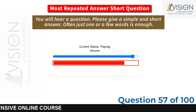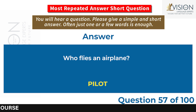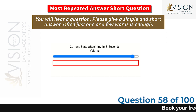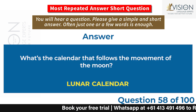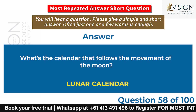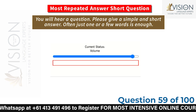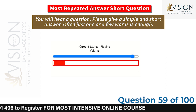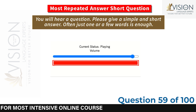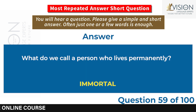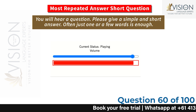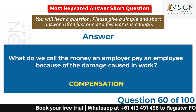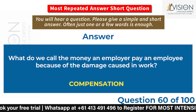Who flies an airplane? Pilot. What is the calendar that follows the movement of the moon? Lunar calendar. What do we call a person who lives permanently? Immortal. What do we call the money an employer pays an employee because of damage caused at work? Compensation.